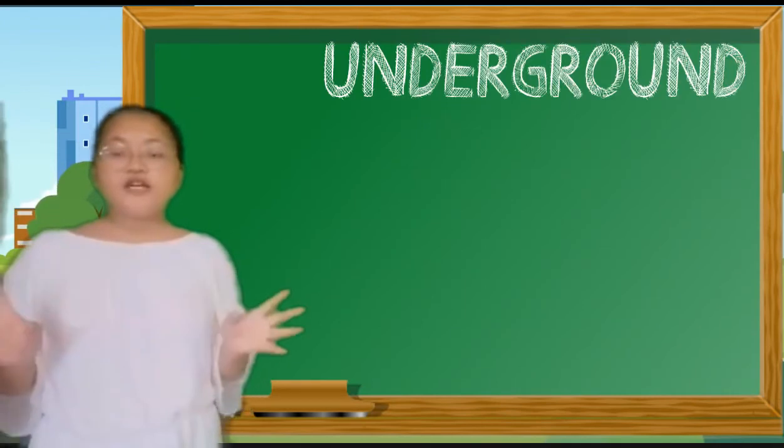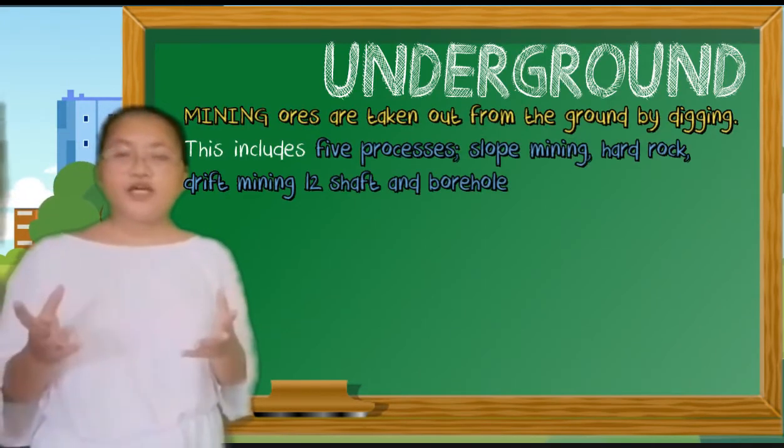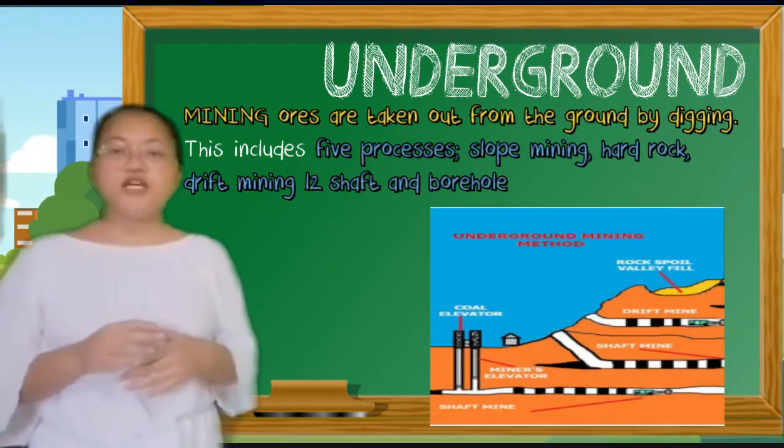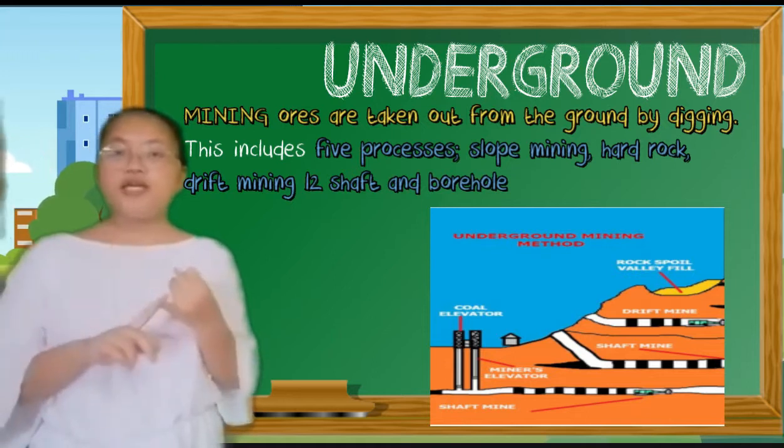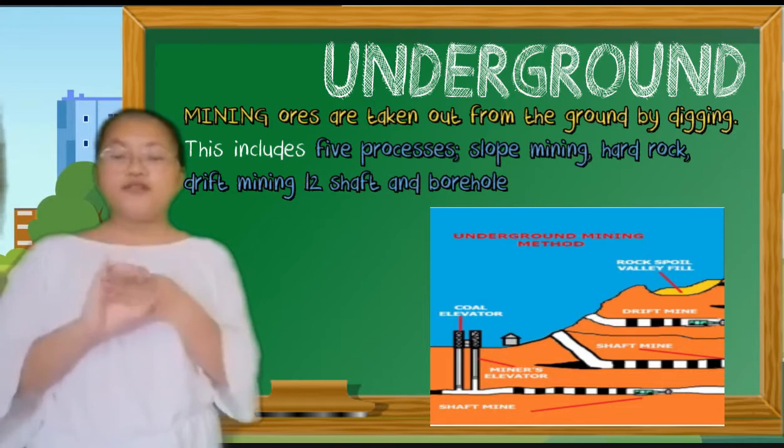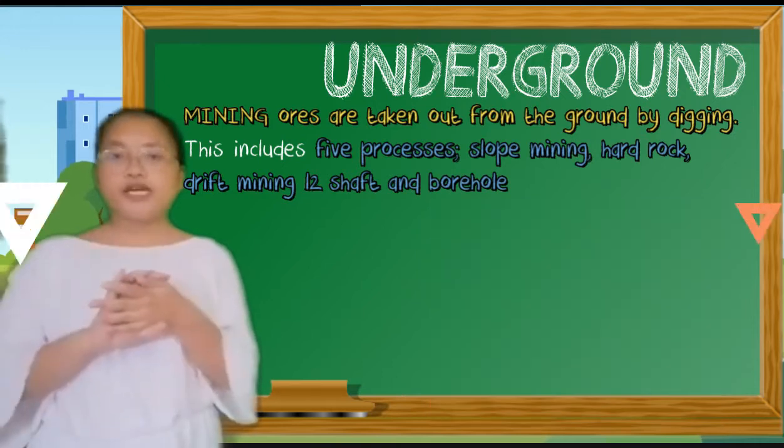In underground mining, ores are taken out from the ground by excavating. This includes five processes: slope mining, hard rock, drift mining, shaft and borehole process.